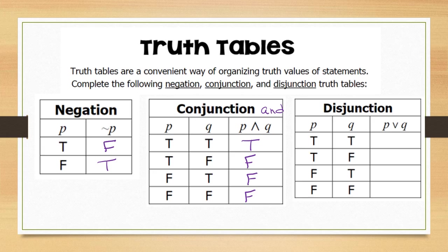For disjunctions, connected by 'or': true or true is true; true or false is true; false or true is true; and false or false is false.